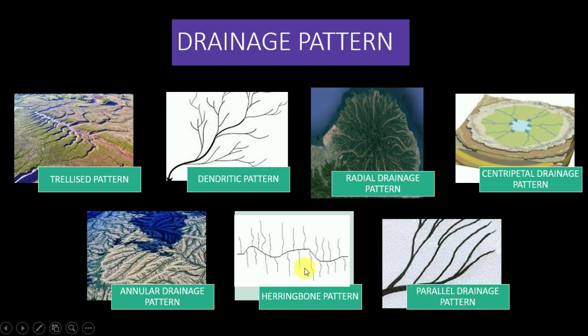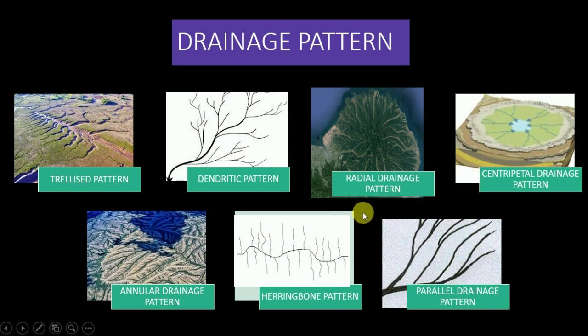Herringbone pattern, also known as rib pattern, looks like the rib bones of a human being. It develops in mountain areas where broad valleys are flanked by parallel ridges with steep hillside slopes. Parallel drainage pattern comprises numerous rivers which are parallel to each other and follow the regional slope. There are also several other drainage patterns, including barbed drainage pattern — also known as hooked shape or pinnet drainage pattern — and various others.